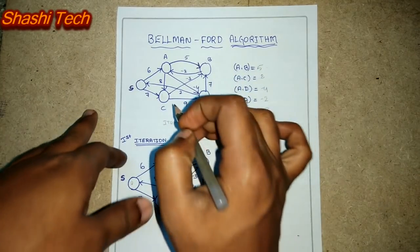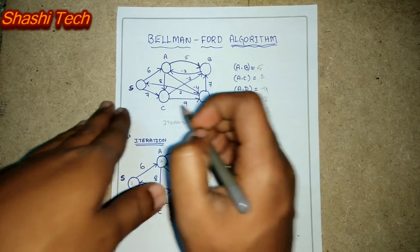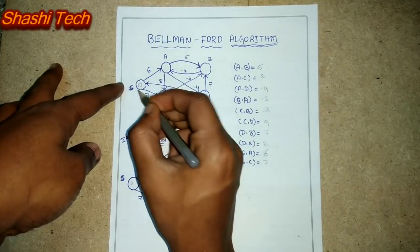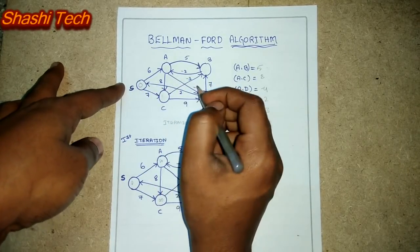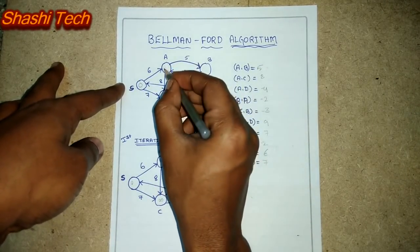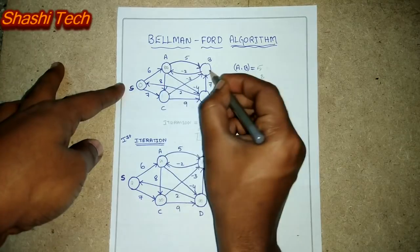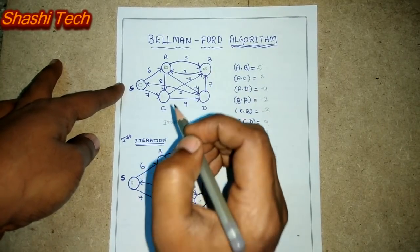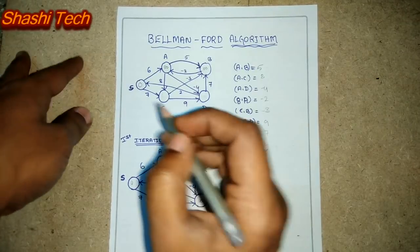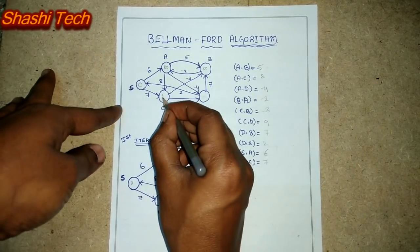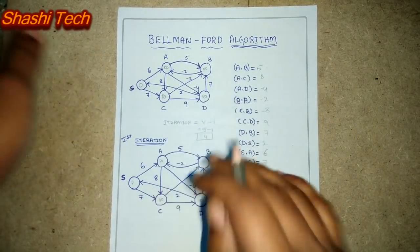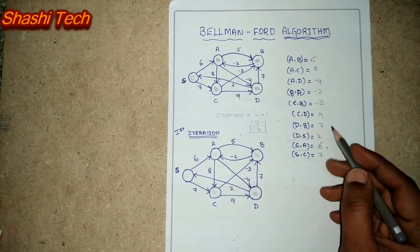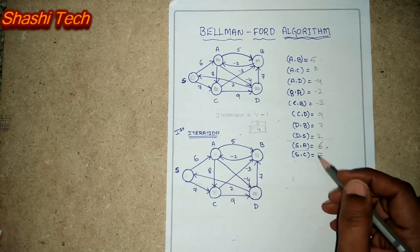Before performing the iteration, you need to initialize some values. The source value should be initialized to 0 and all remaining other vertices should be initialized to infinity. This is not an iteration — it is the process before the iteration. You should initialize all others to infinity. By considering this table, we are going to perform the iteration.